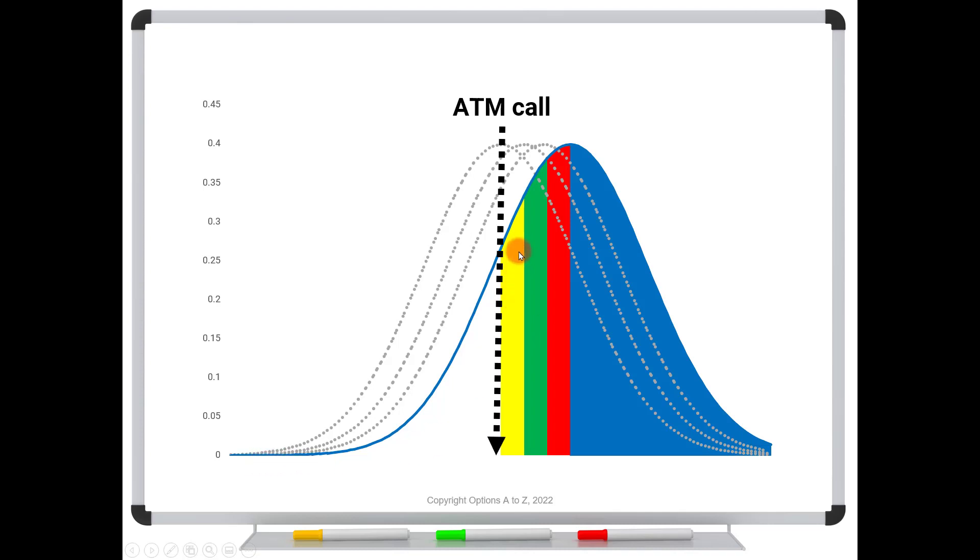What that's saying at that point is that the bell curve is so far to the right. So if our strike was way out here in this left tail, we're saying that even if the stock price makes a really big move to the downside, this is still going to be an in-the-money option at that point because this bell curve has moved so far to the right.